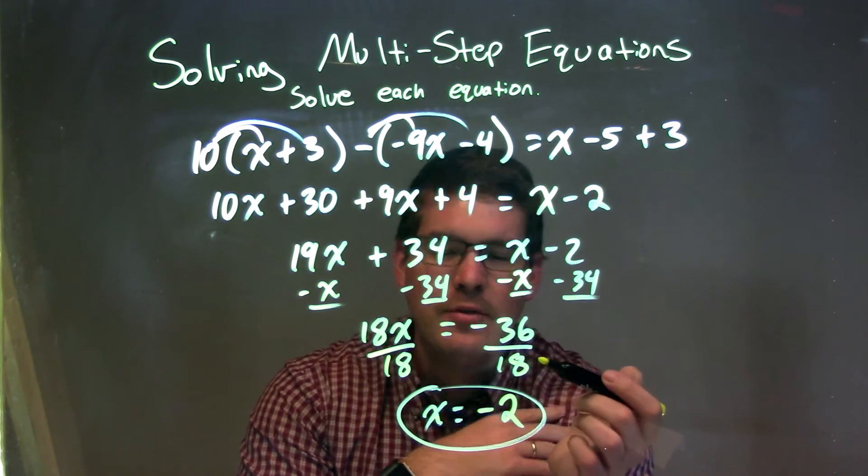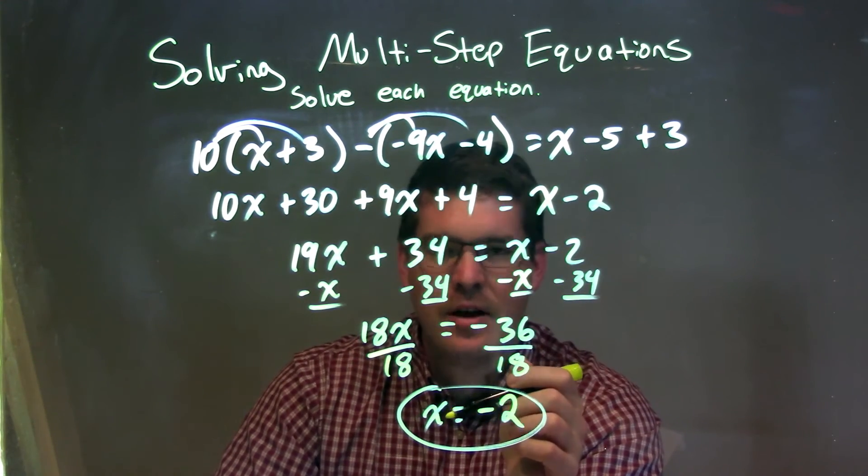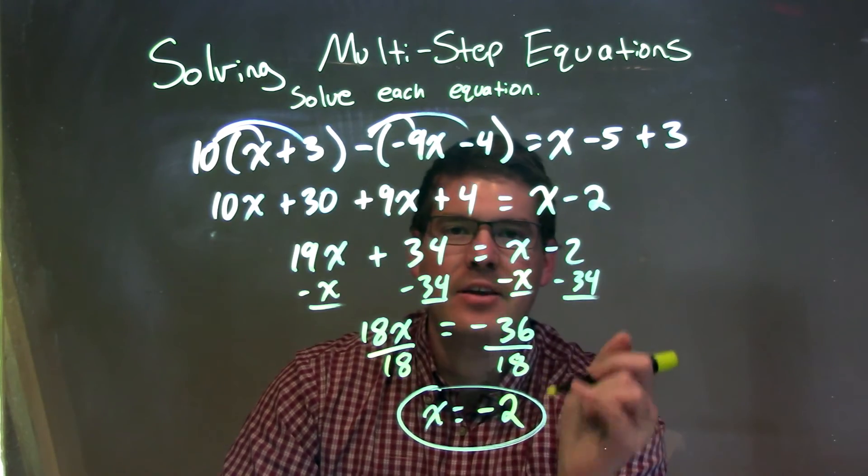From there, I divided both sides by 18, giving me x isolated by itself, equal to our final answer: negative 2.